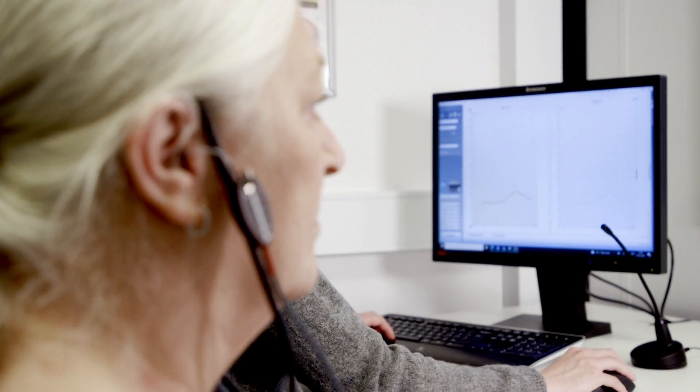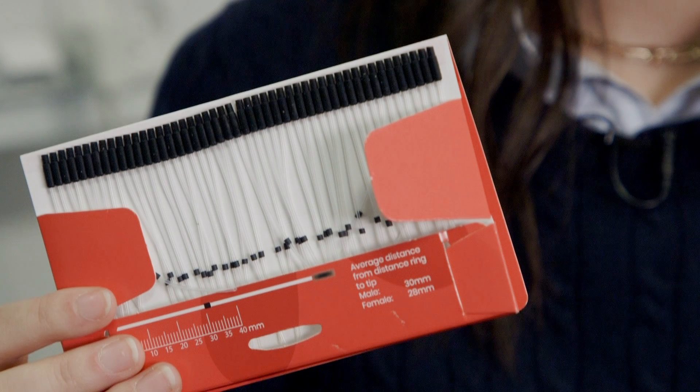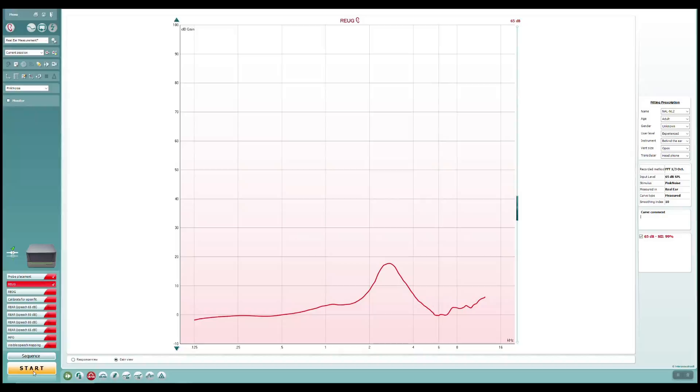It is important for the quality of your real ear measurements that the probe tube is placed at the correct depth. This is how you can estimate correct probe tube placement using otoscopy, black marker placement, and a real ear unaided gain measurement.